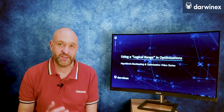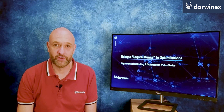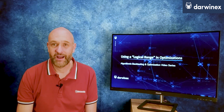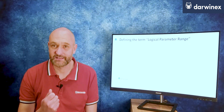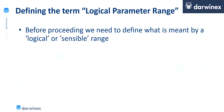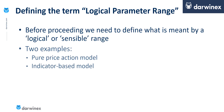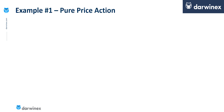The first thing I need to cover is how I actually define what I mean by a sensible range. To do that, let's look at a couple of examples. I'll look at one example that uses a fairly purist price action model, and then one that uses an indicator. So let's look at the price action model first.